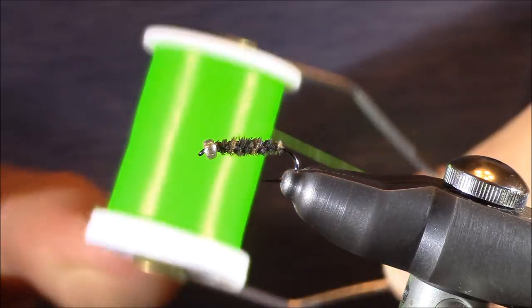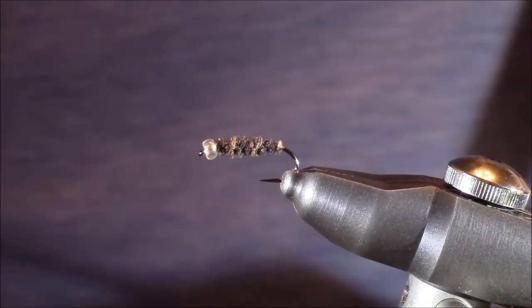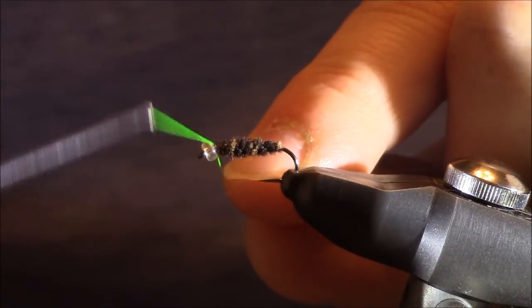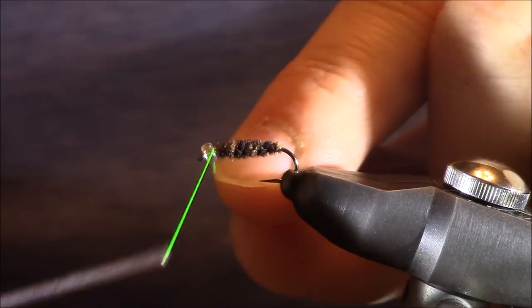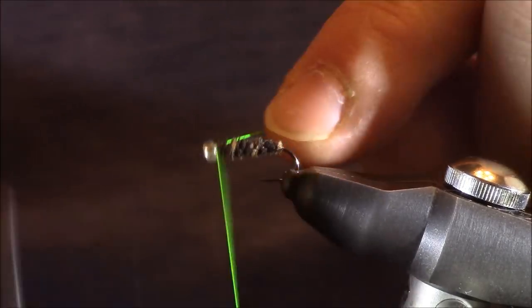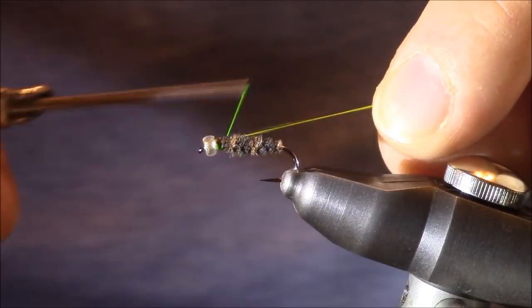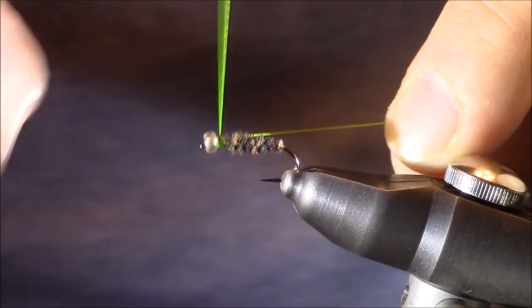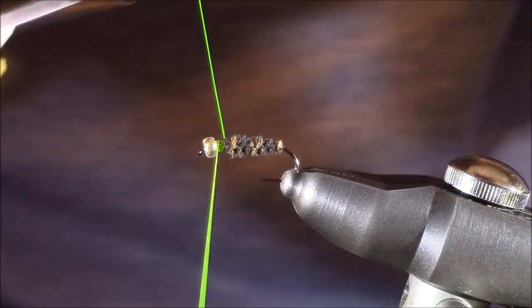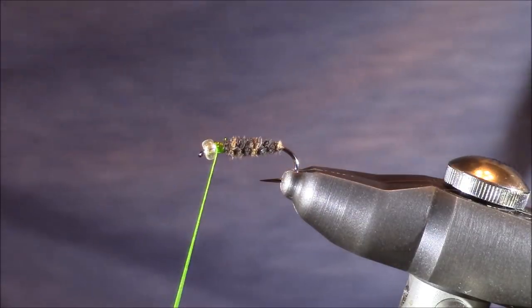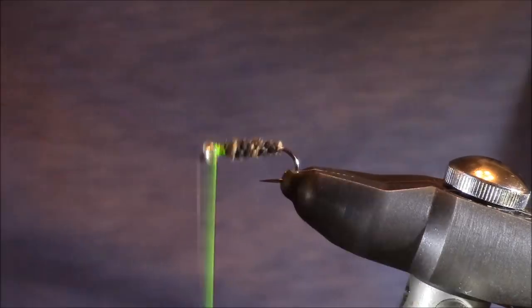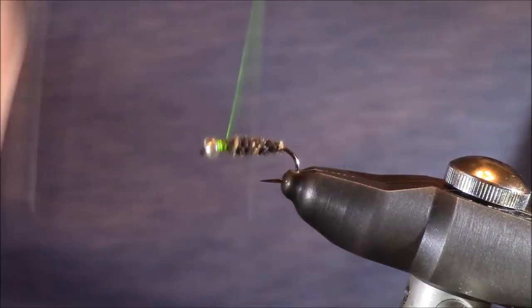Next, I'm going to grab some chartreuse thread. This is going to be representing the caddis coming out of the casing. I'm going to tie it in directly behind that bead. If you notice, I'm just pushing that bead forward, and I'm going to wrap back, and I just want to keep going back and forth until I've built up a small section that you can really start to see.